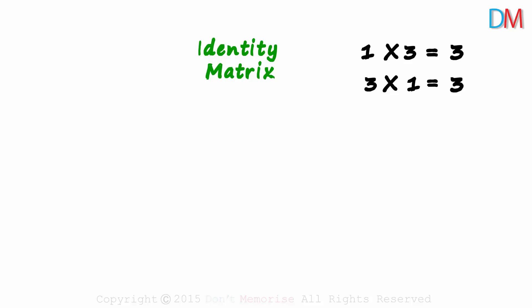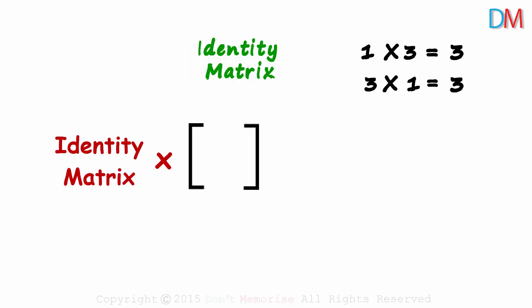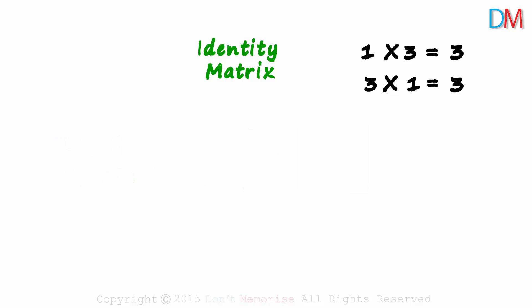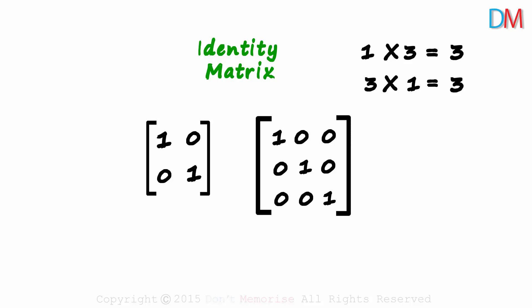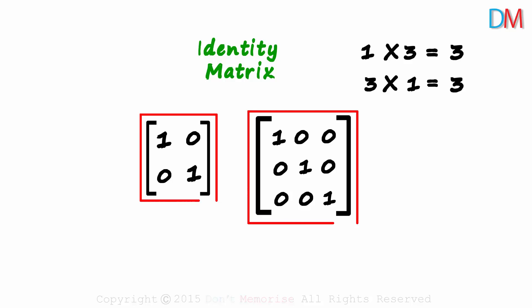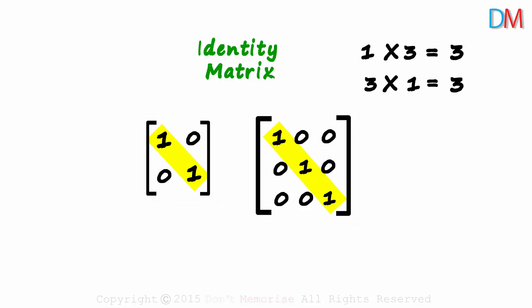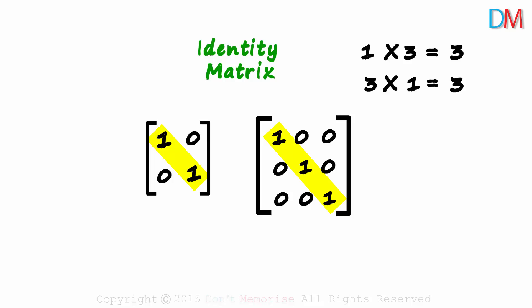So you can probably guess what an identity matrix is. No matter which matrix it is multiplied with, it will give us the same matrix. A 2 by 2 identity matrix looks like this, and a 3 by 3 identity matrix looks like this. It is a square matrix which has all the elements in the leading diagonal as 1 and the rest of the elements as 0.